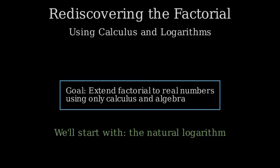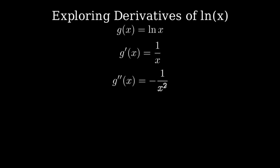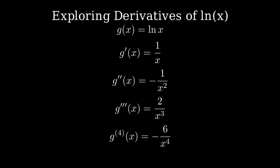Let's explore the derivatives of the natural logarithm. This might seem random at first, but I promise you it's going somewhere amazing. We start with the function g(x) = ln(x). The first derivative is 1/x. The second derivative is -1/x². The third derivative is 2/x³. And the fourth derivative is -6/x⁴.